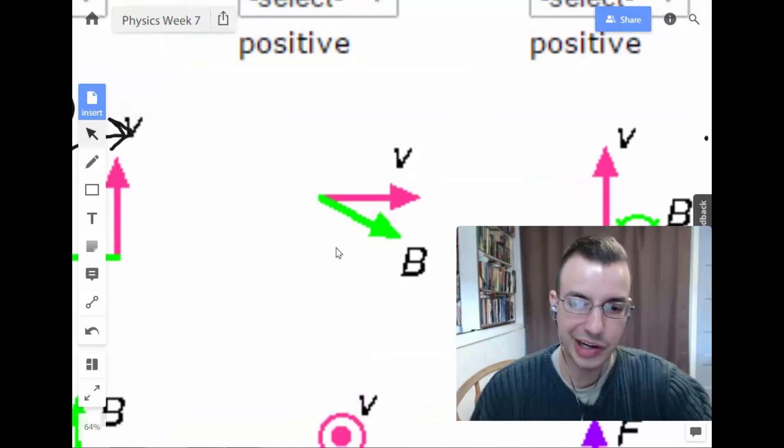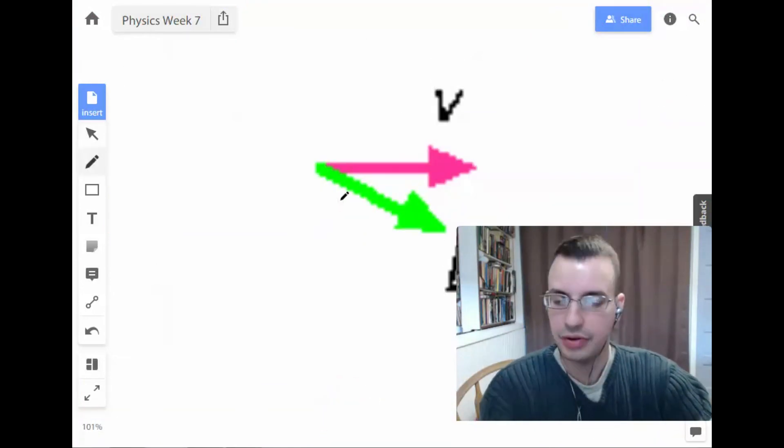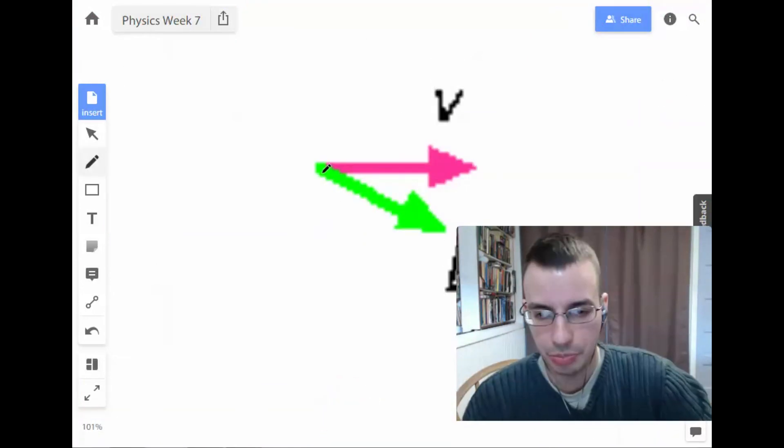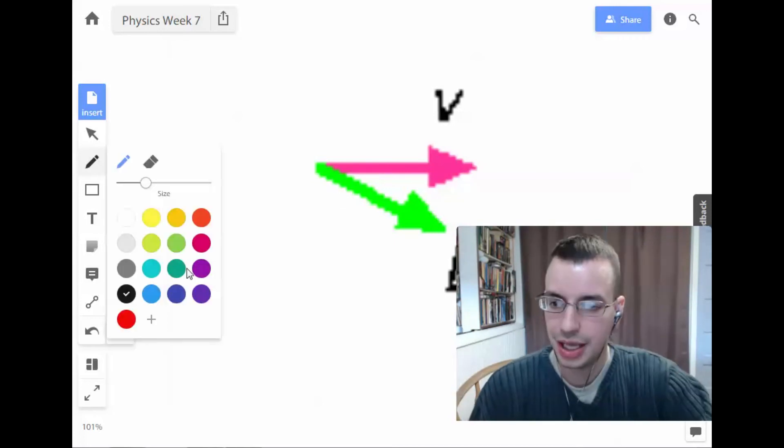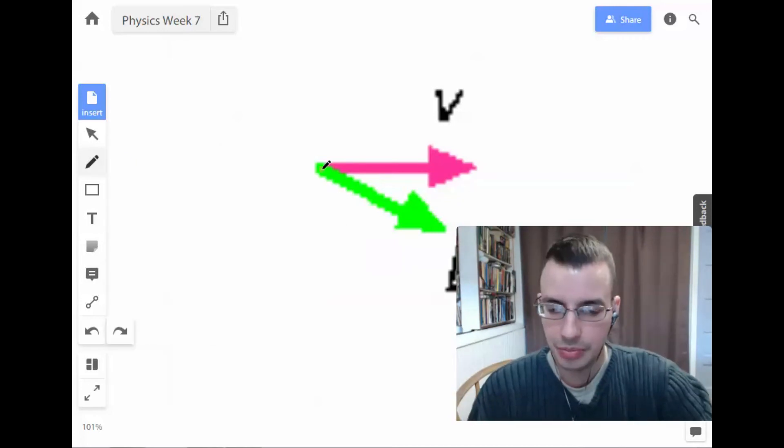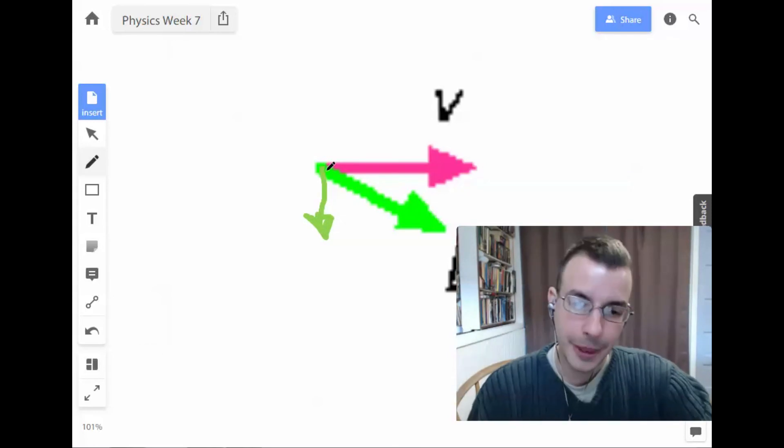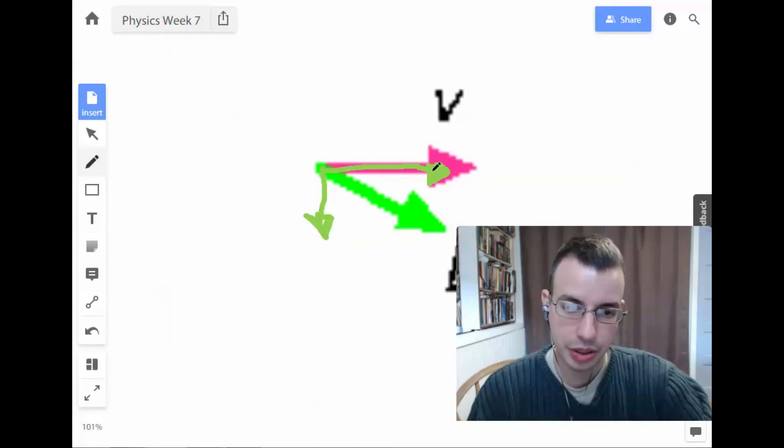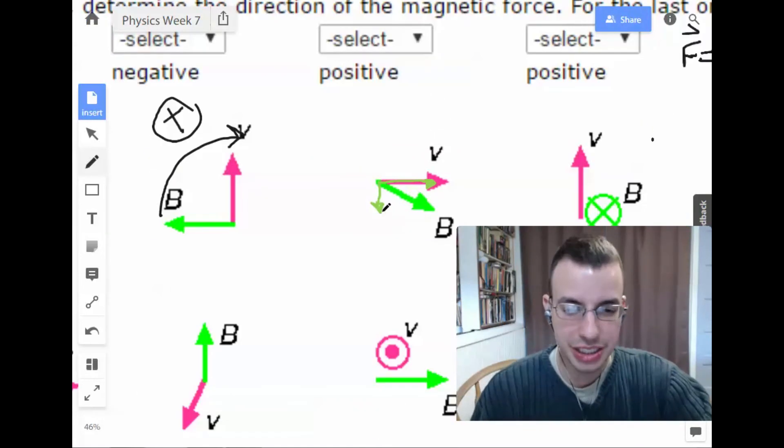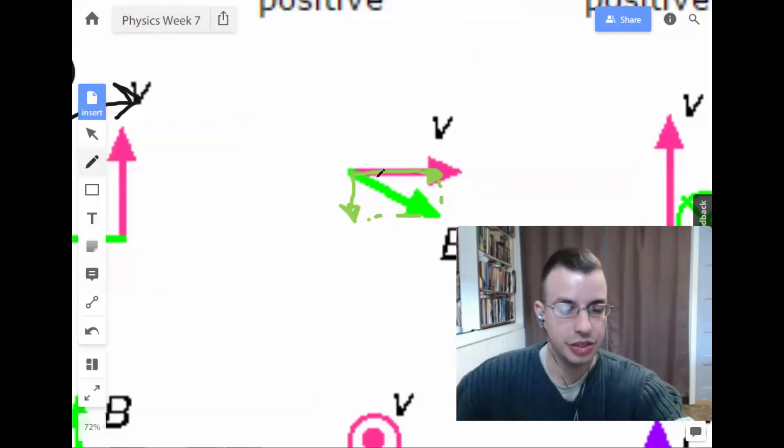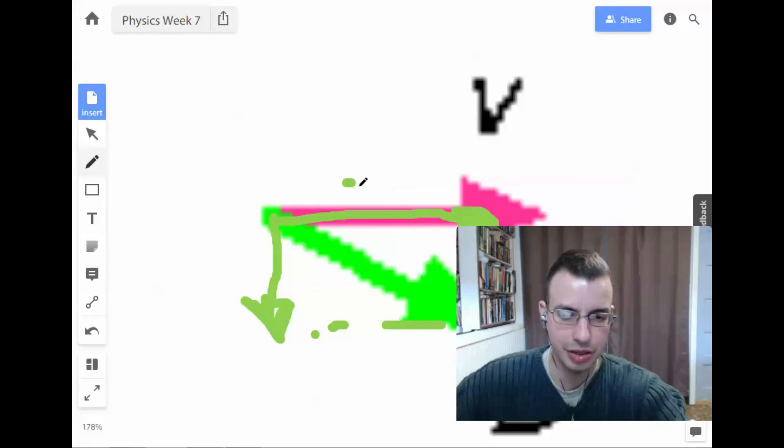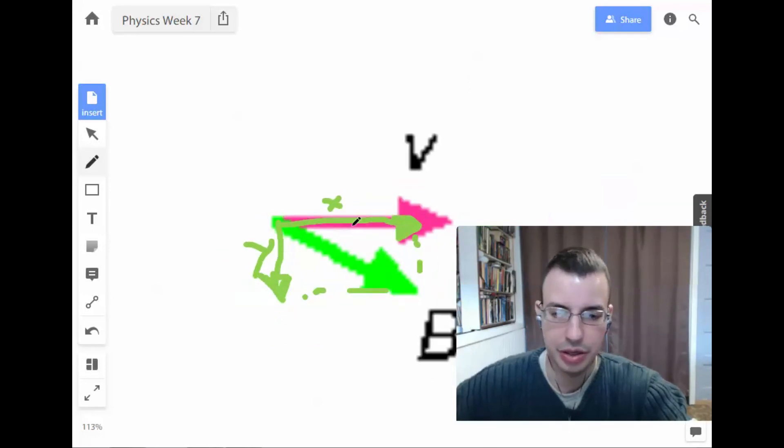So now we have one where they are not perpendicular. Well, I have a general rule in life where I only deal with perpendiculars. So I'm going to redraw. I am going to decompose the magnetic vector into two vectors. We're going to have the X component and this will be the Y component.